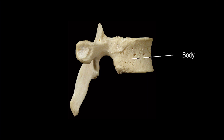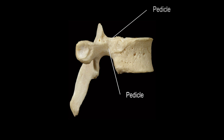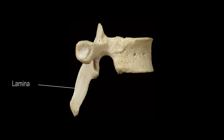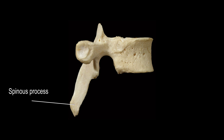Here we see the body of the vertebra. This is the right pedicle. We can see just a bit of the left pedicle peeking out way up over here. Here is the right side lamina. Here is the spinous process.